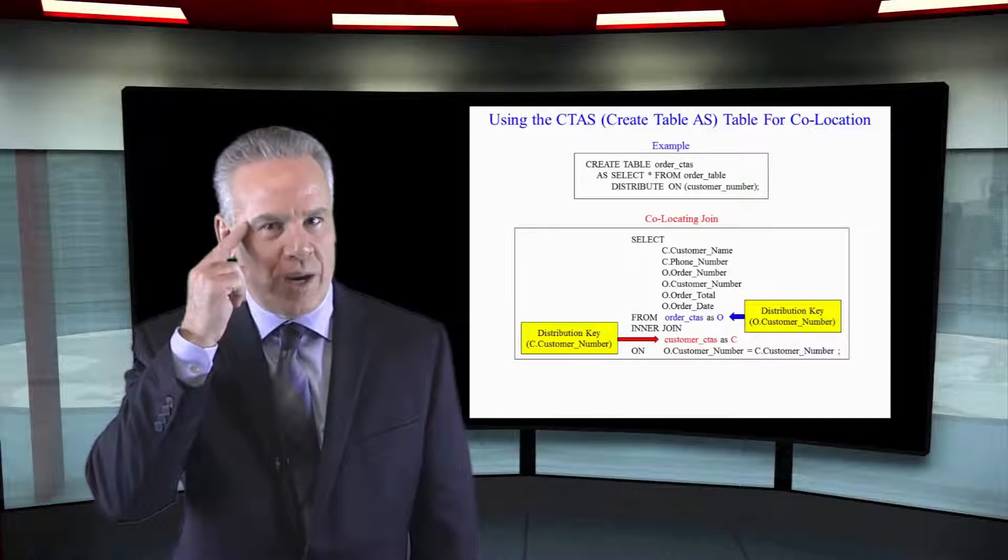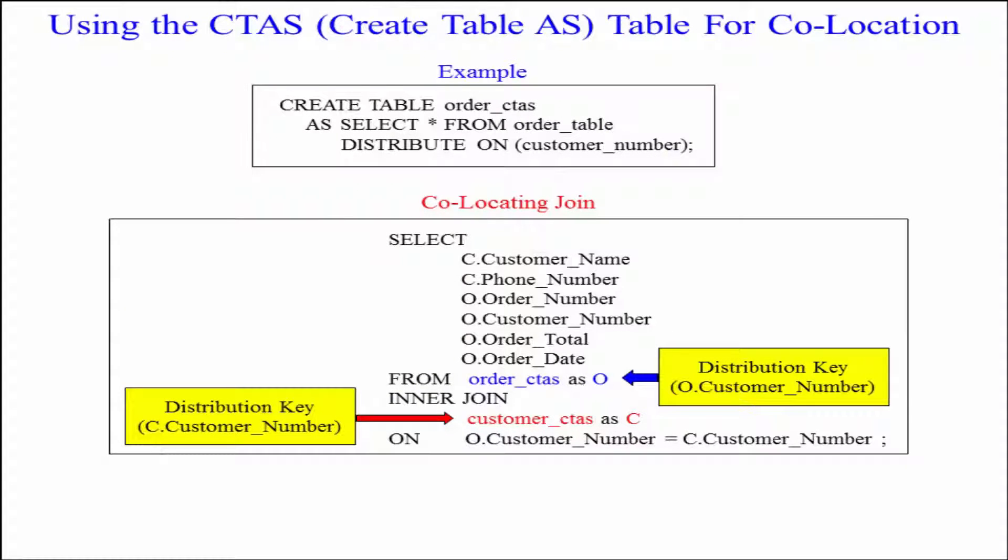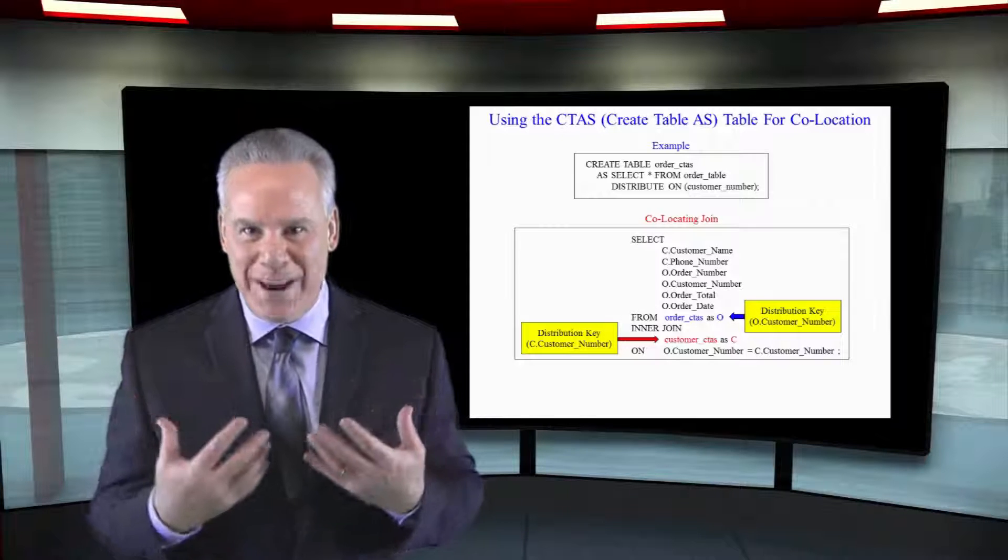We're using the old brain. Here we have created a table as, and we call it order CTOS, as select everything from the order table, distribute on customer number. So now that we've got our new table,